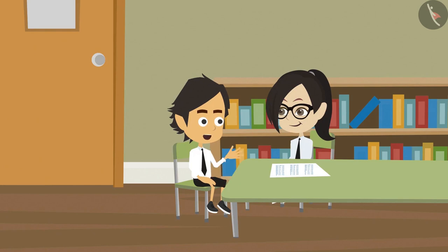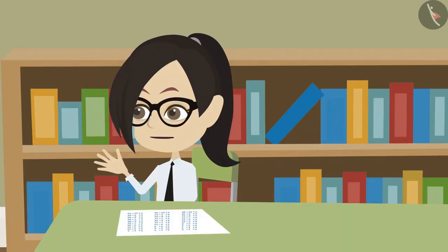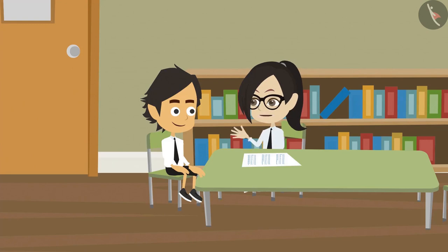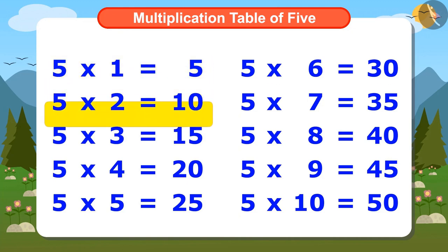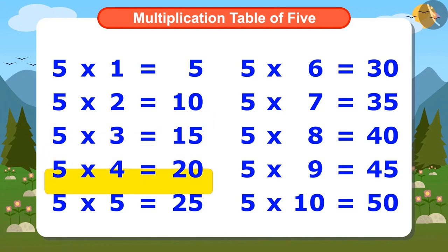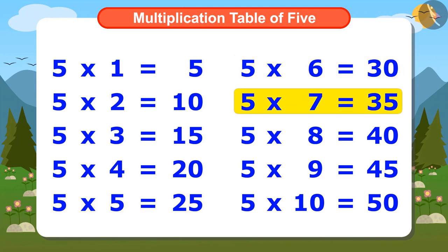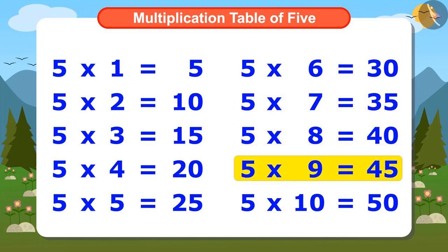Now I have understood — to find the multiplication table of large numbers, we can use the multiplication tables of smaller numbers. Now I will try to memorize the multiplication table of 5 by reciting it. 5 ones are 5, 5 twos are 10, 5 threes are 15, 5 fours are 20, 5 fives are 25, 5 sixes are 30, 5 sevens are 35, 5 eights are 40, 5 nines are 45, 5 tens are 50.